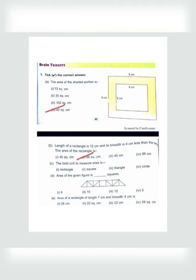The best unit for measuring area is square. For the area of the given figures, we just count the squares. Let's count: both are half, this will make 1, 2, 3, 4, 5, and this whole is 6 — so the answer is 6 square units.